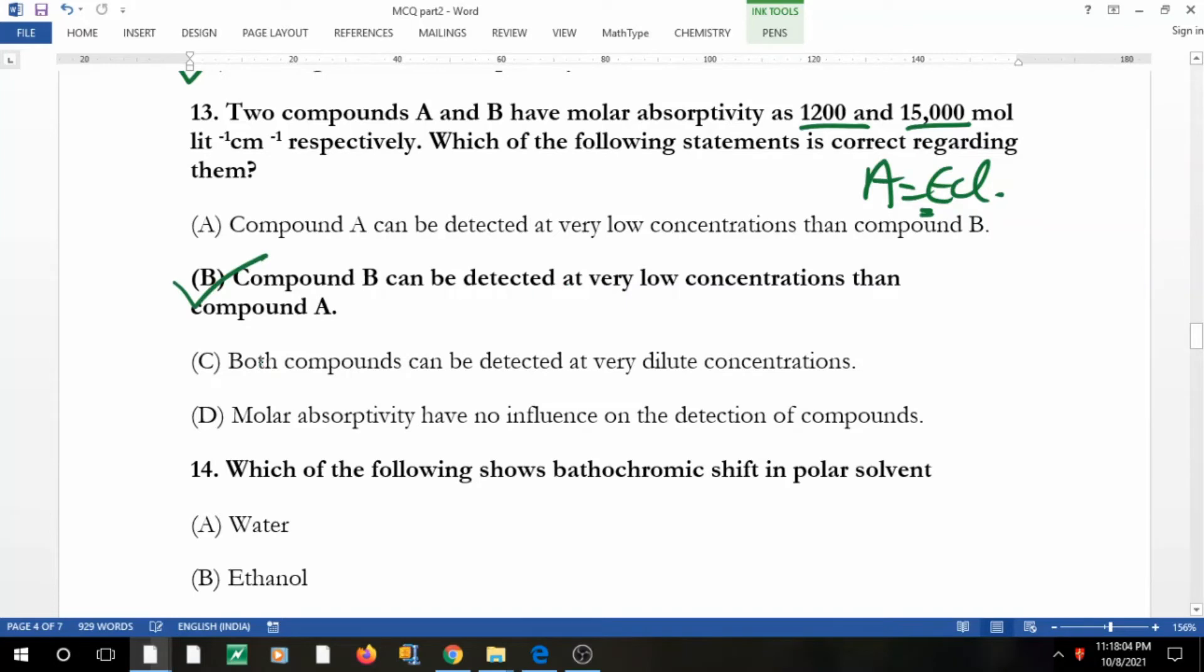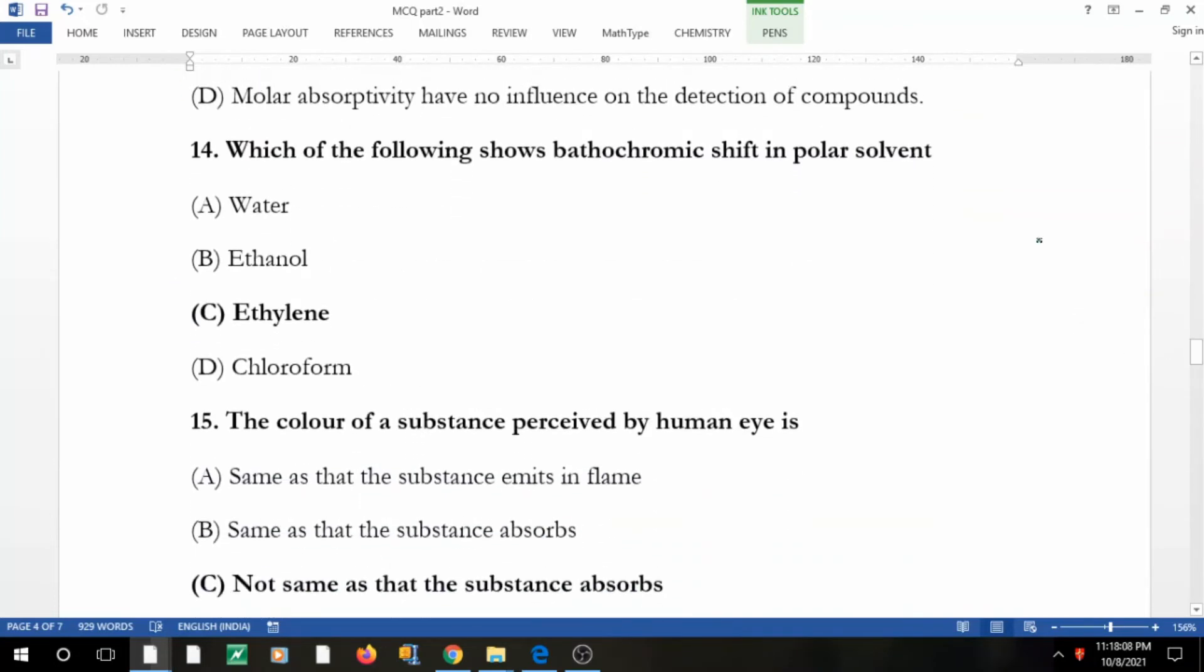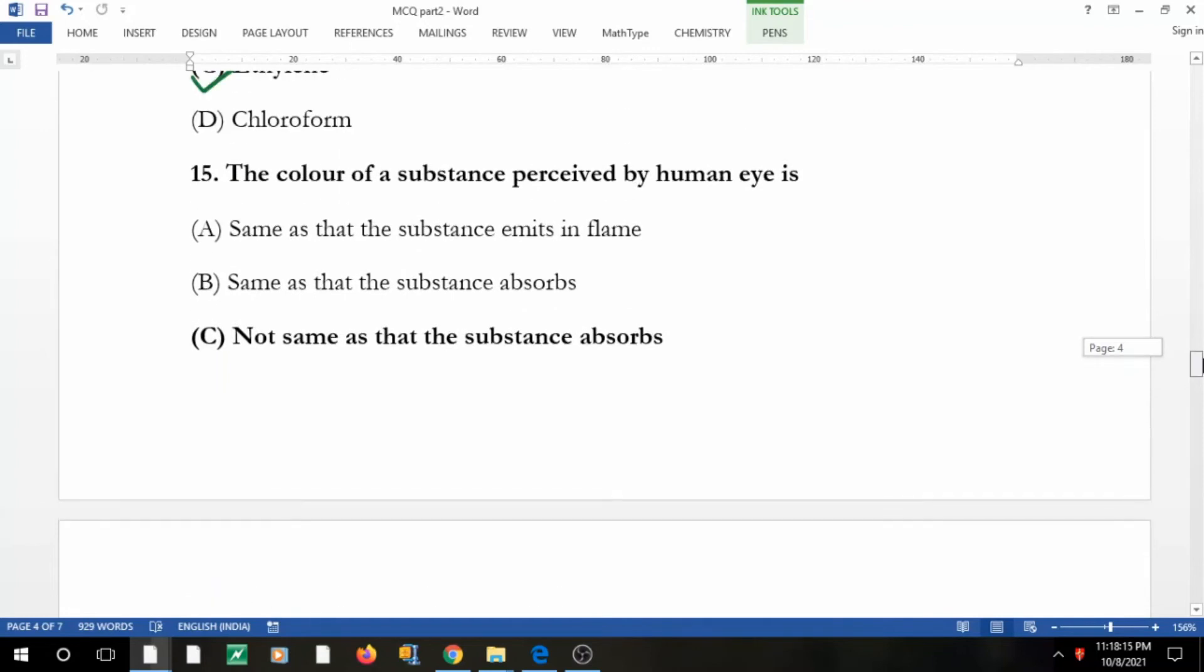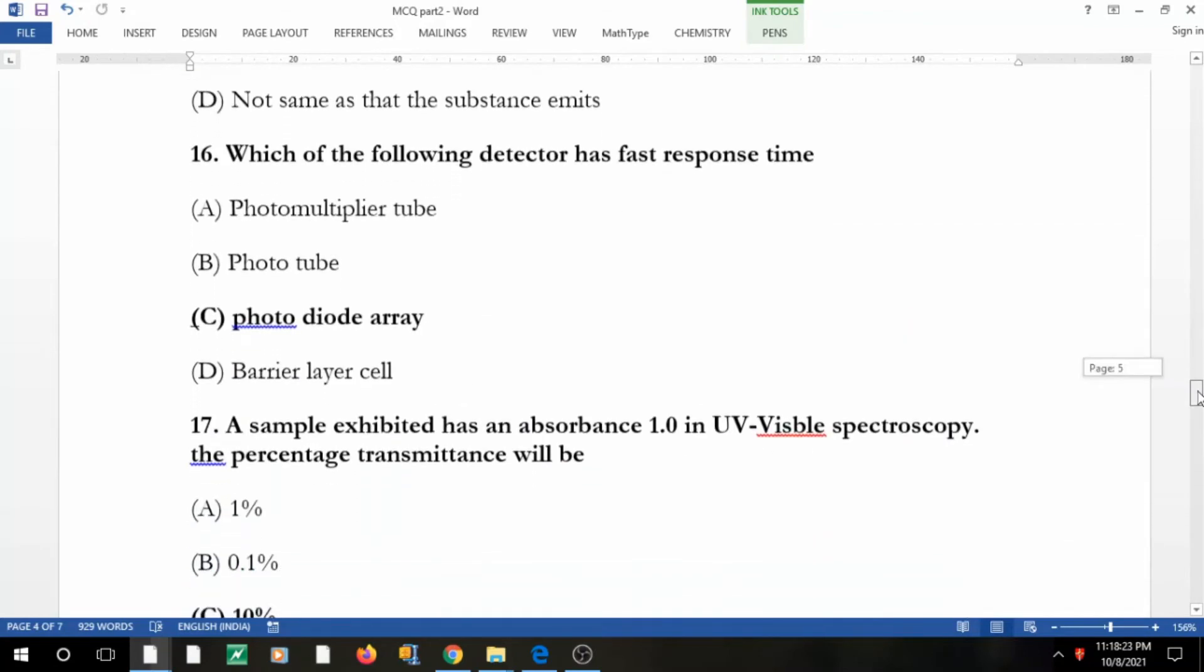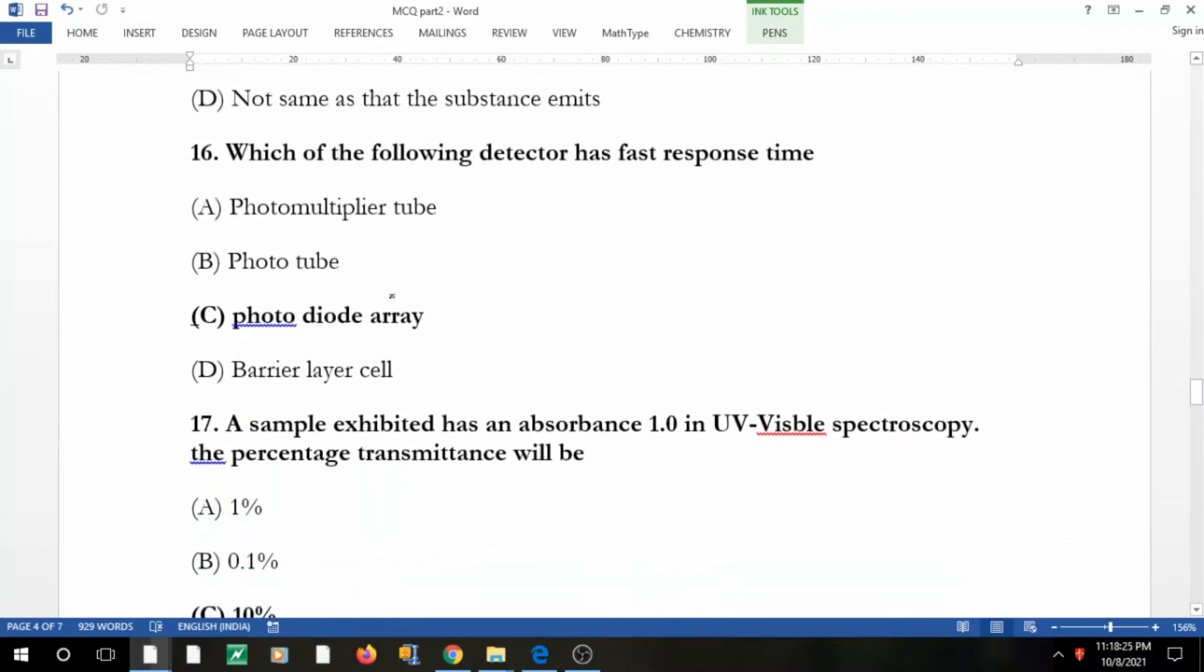Which of the following shows bathochromic shift in polar solvent? It's ethylene. You may go and watch the video. Why is the color of the substance perceived by human eye obviously not same as that of the substance absorbed, right?